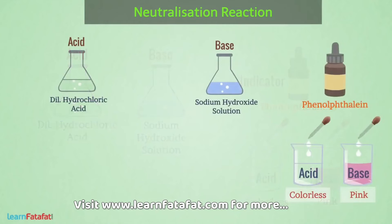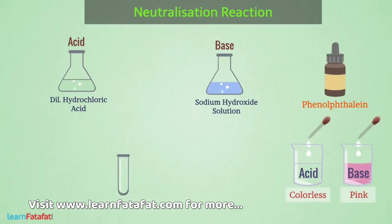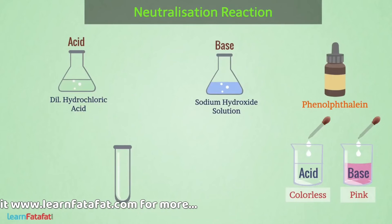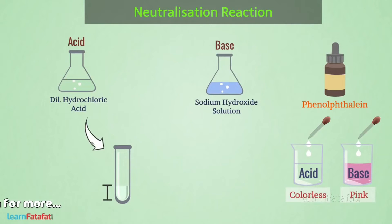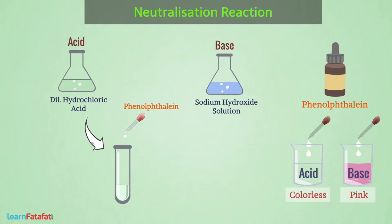Take a test tube and fill one fourth of its part with dilute hydrochloric acid. Now add 2 to 3 drops of Phenolphthalein indicator. The color of Phenolphthalein in acids is colorless.